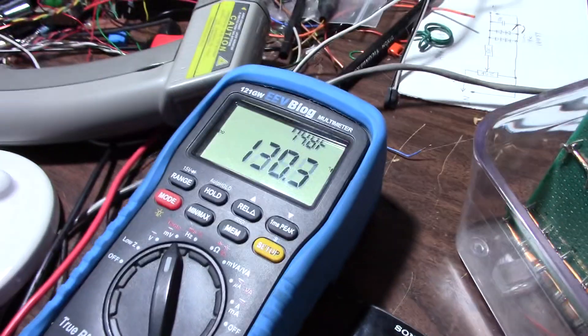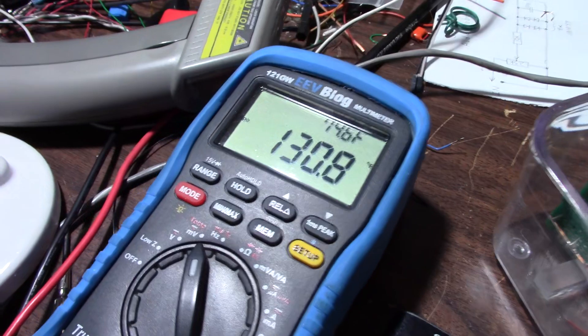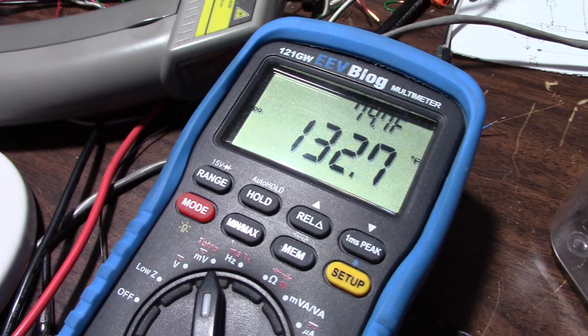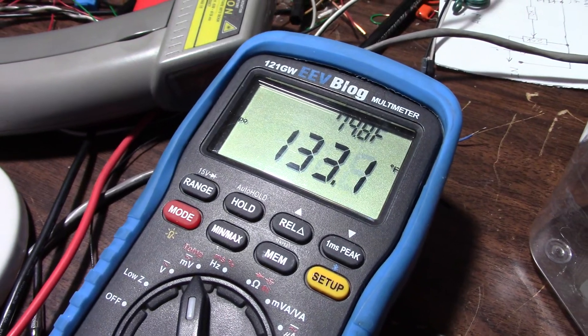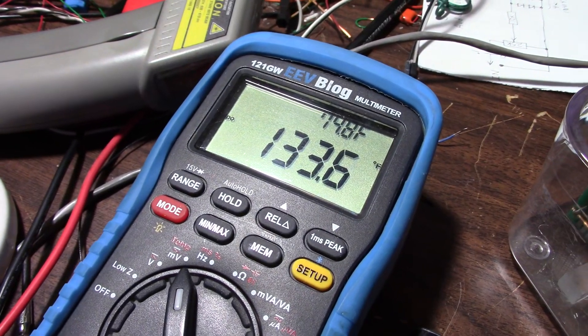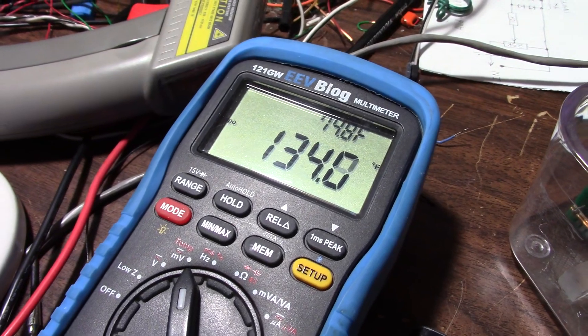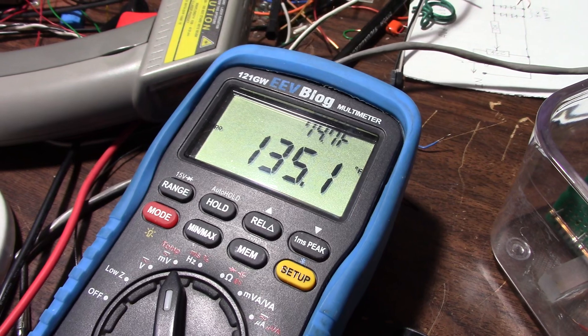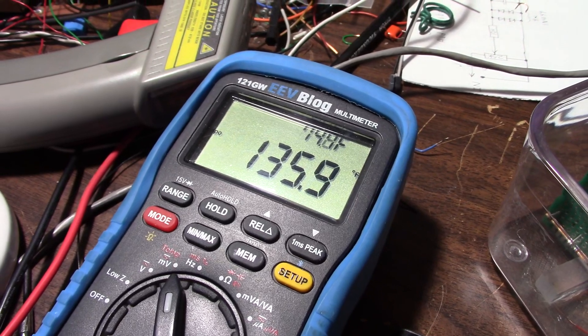It'll take a while for the meter to catch up. I can't figure out how to set the readout to Celsius, I'm sure it's in the manual somewhere. But if I let this on here it'll come up to 140 degrees Fahrenheit, and that is 60 degrees Celsius.